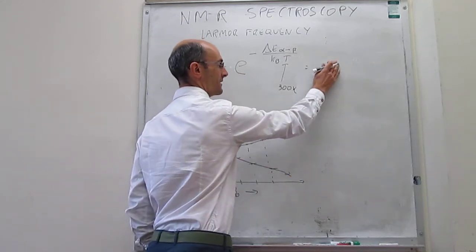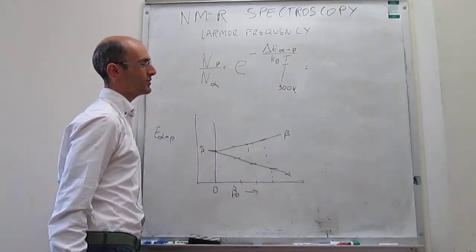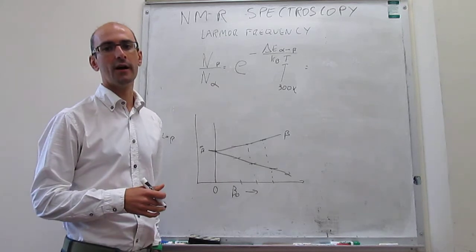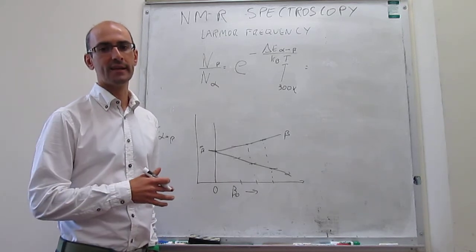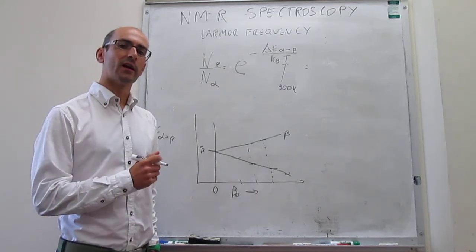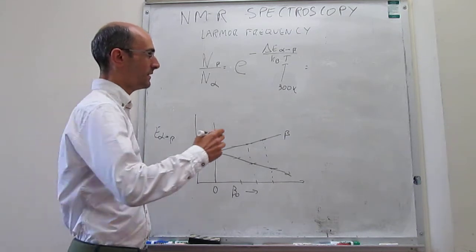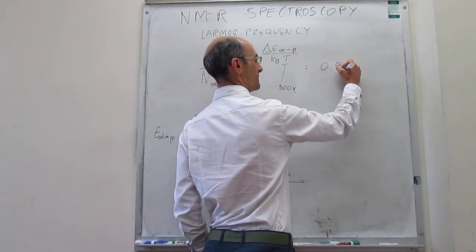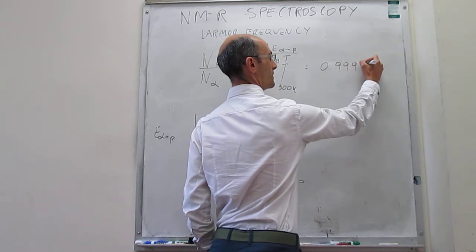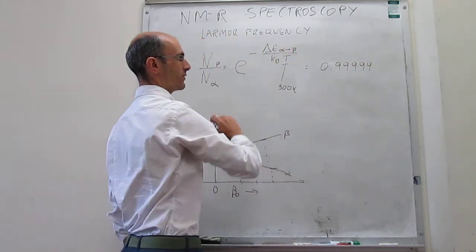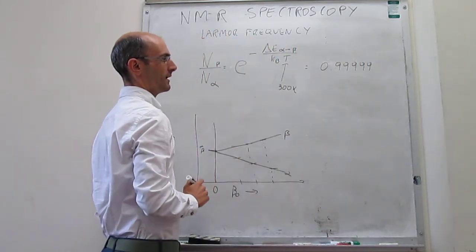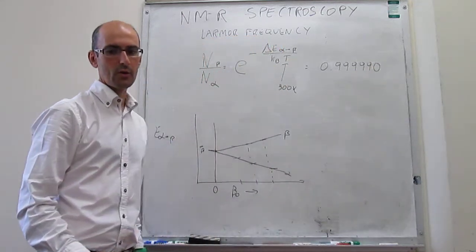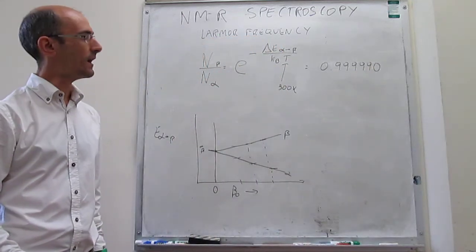The ratio of nuclei in the low-energy alpha spin state to those in the higher-energy beta spin state turns out to be a number very, very close to one — specifically 1.0001 if we consider all significant digits. That is the population ratio we get for NMR.